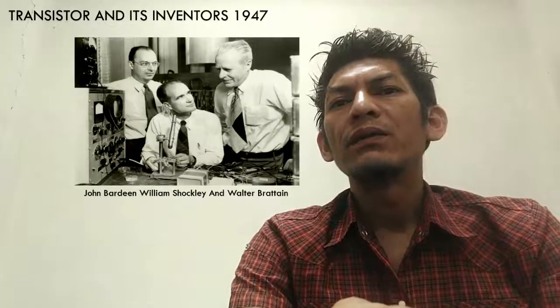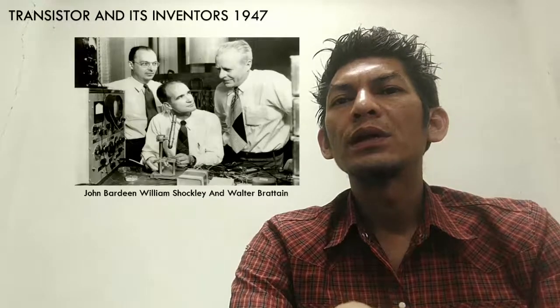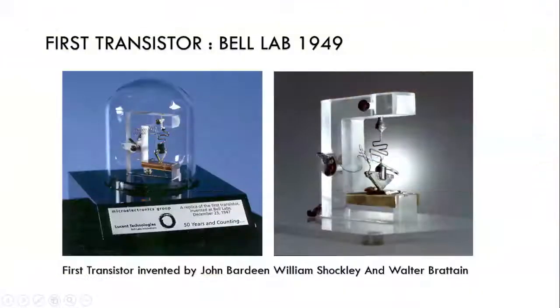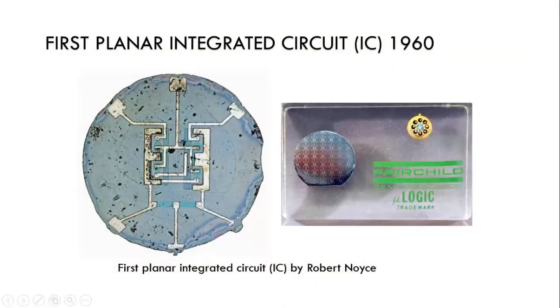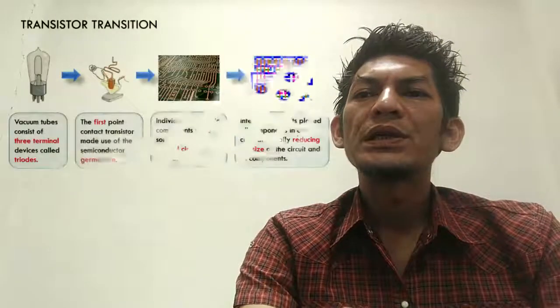For transistor invention, we have three inventors: John Bardeen, William Shockley, and Walter Brattain. This is a sample of the first transistor IC. The first integrated circuit was invented by Jack Kilby around 1958 — this is the picture for first IC. The first microchip was invented by Robert Noyce. This is a sample of the first planar integrated circuit.